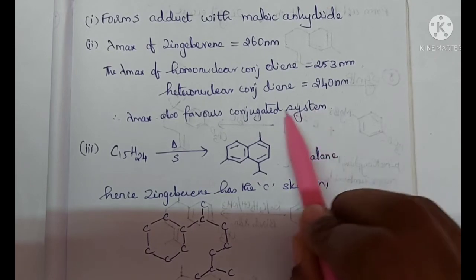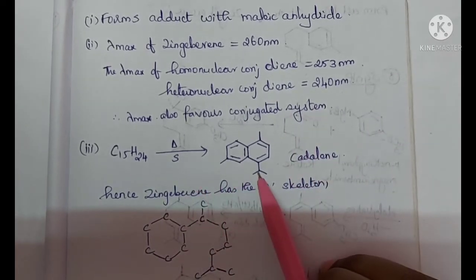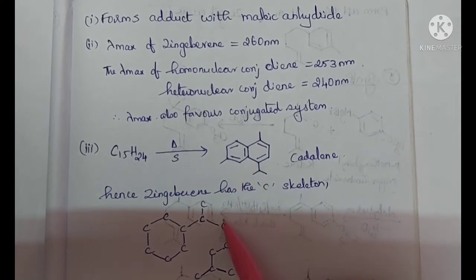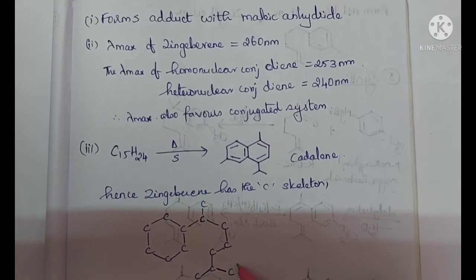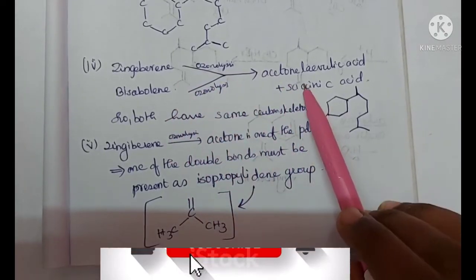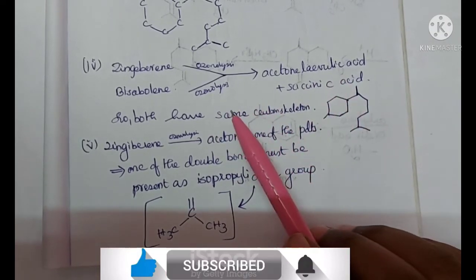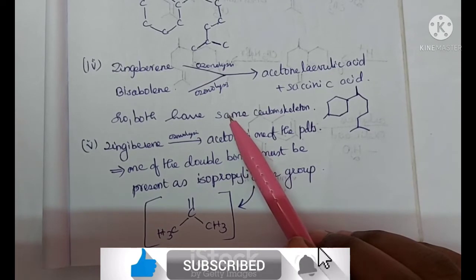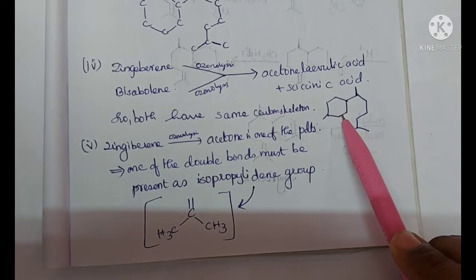That is, the two double bonds are conjugated. Zingiberine when heated with sulfur forms Cadinene. This shows that Zingiberine has the carbon skeleton of Cadinene. This is the carbon skeleton of Cadinene. Zingiberine and Bisabolene on ozonolysis give acetone, levulinic acid, and succinic acid. So this shows that Bisabolene and Zingiberine have the same carbon skeleton structure. This is the carbon skeleton structure of Bisabolene, which is similar to the carbon skeleton structure of Zingiberine.